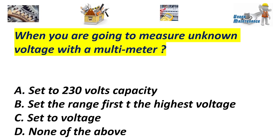When you are going to measure an unknown voltage with a multimeter: A. Set the 230 volts capacity. B. Set the range first to the highest voltage. C. Set the voltage. D. None of the above. Answer: B. Set the range first to the highest voltage.